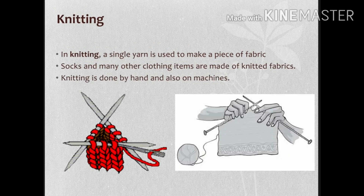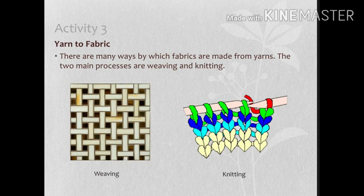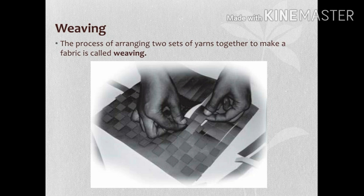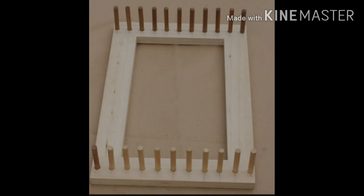Now this is how knitting is done — with the help of knitting needles. This is very common. You might have seen your mother or grandmother using these needles to make sweaters. This is how loops and locked loops are made, and these loops change into a kind of fabric which is turned into a sweater.